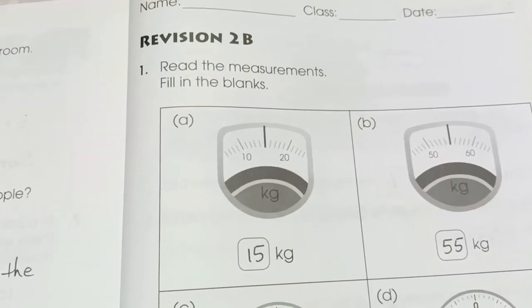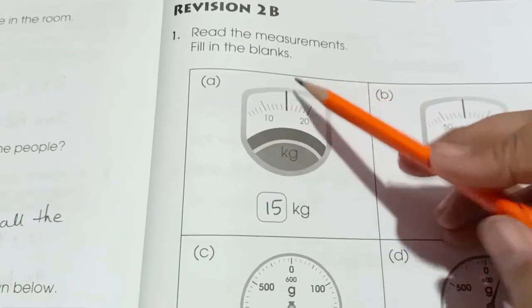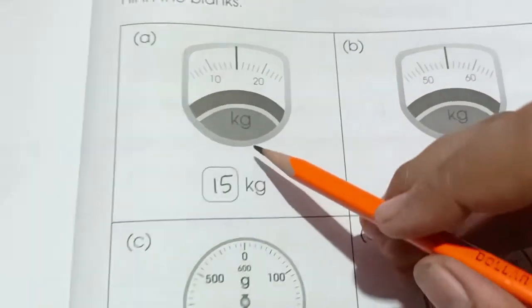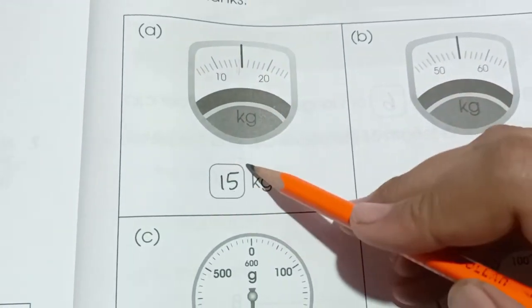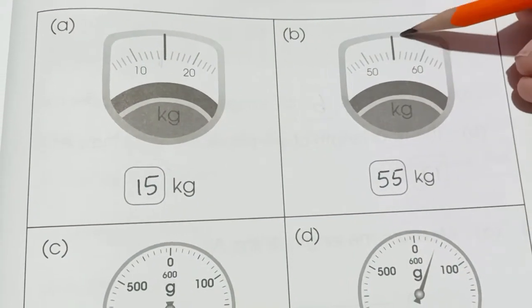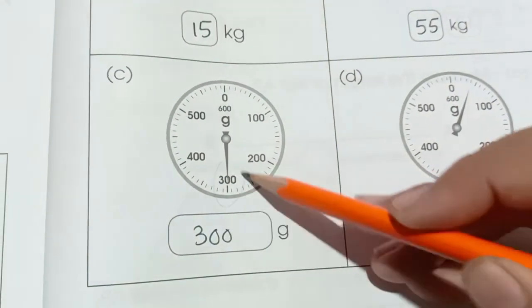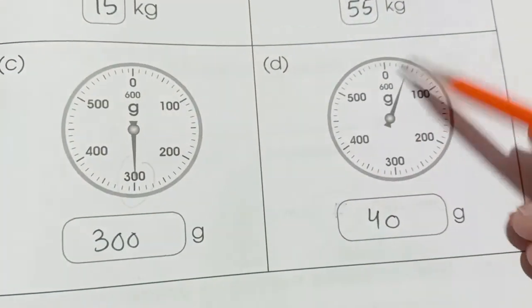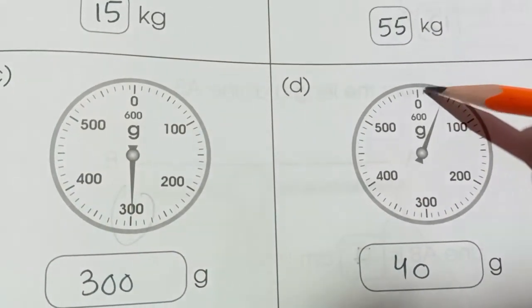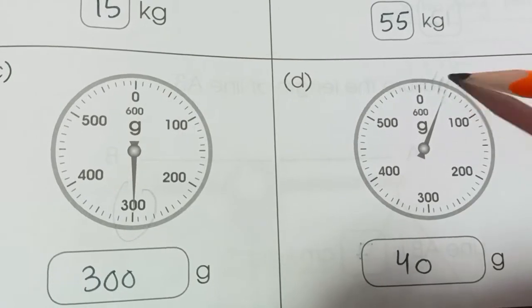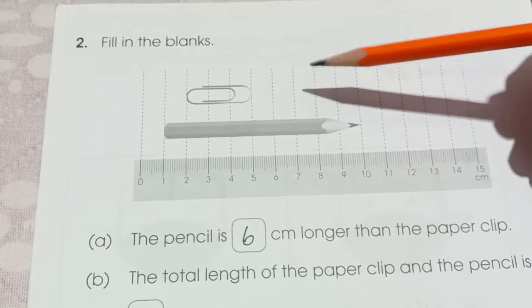Revision 2B, page number 199. Here we have read the measurements and fill in the blanks. Number 1 is 10, 20 and this is in the center so it is 15. 50, 60, center is 55. This is 300. This is 10, 20, 30 and 40.